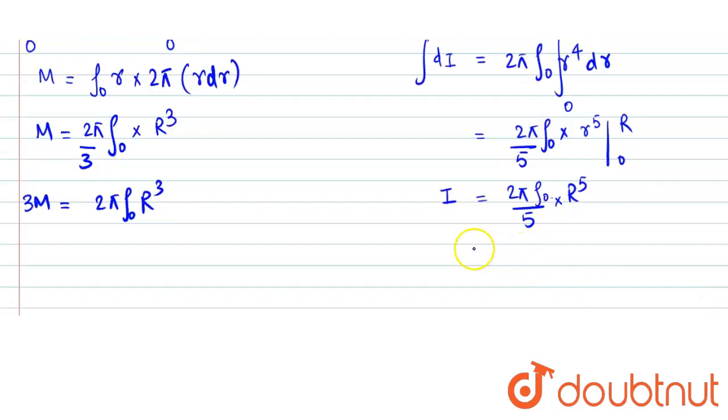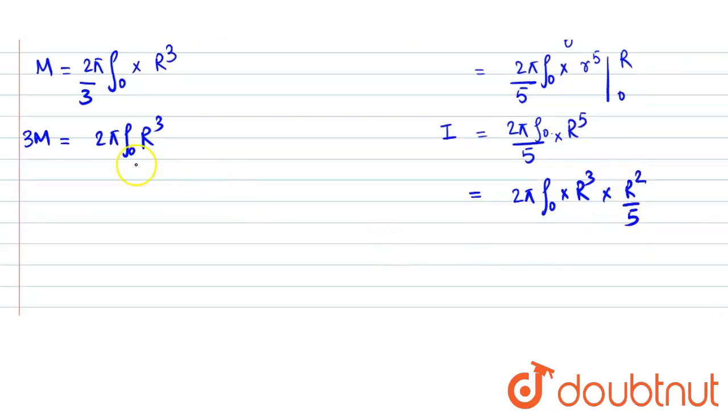Now let's put the value. That becomes 2 pi rho naught into r cube into r square by 5. And instead of 2 pi rho naught into r cube we can put 3m. So that becomes 3m r square by 5. This is the moment of inertia.